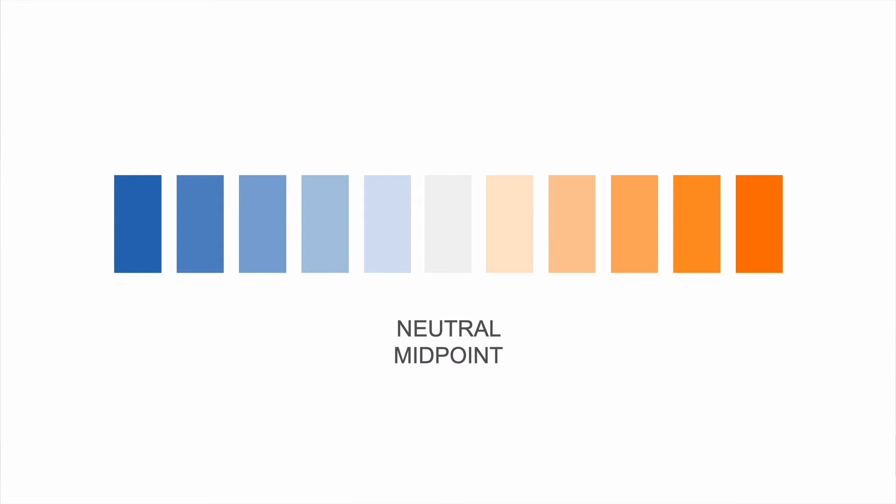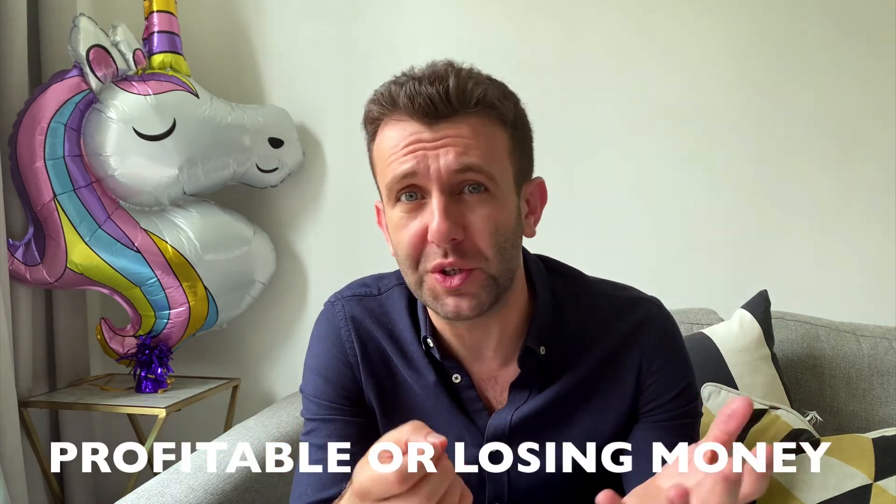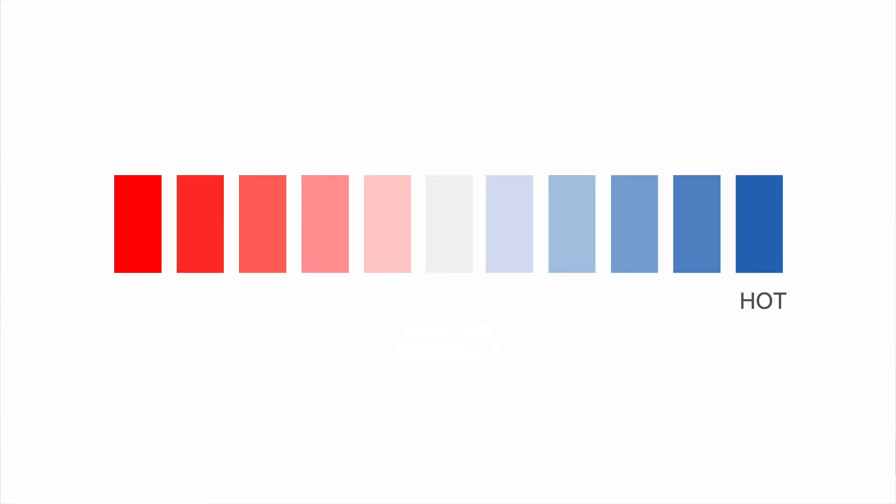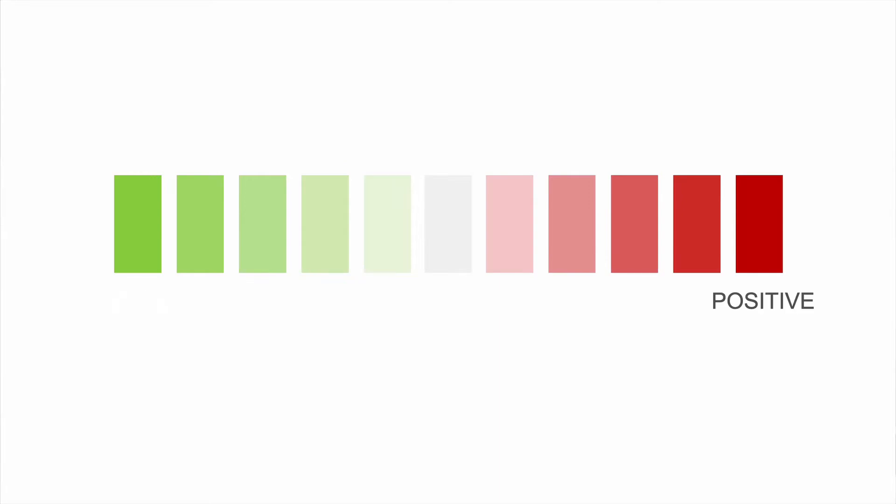Divergent. When you have data on a scale where it separates into two different sets, you want to use a divergent colour palette — basically two sequential colour palettes, often with a neutral midpoint. Divergent palettes are great for showing if people rated your company positively or negatively, if a customer is profitable or losing you money, or if temperatures are above or below freezing. Remember that colours have meaning: don't have blue symbolising hot and red symbolising cold, or red for positive and green for negative. Spend a minute thinking about which two colours make the most sense for your visualisation.